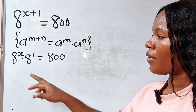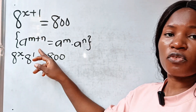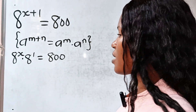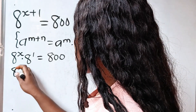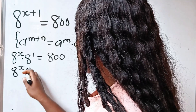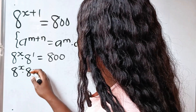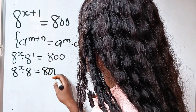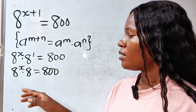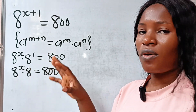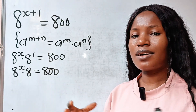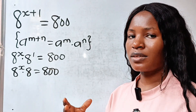Now, 8 to the power of 1 is 8. So we can write this as 8 to the power of x multiplied by 8 is equal to 800. Now we are looking for x. Let's start removing anything that is attached to x.